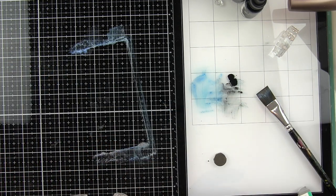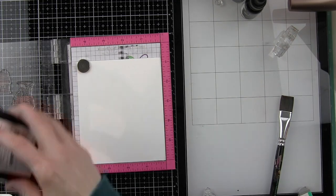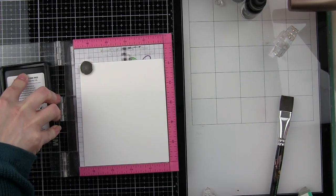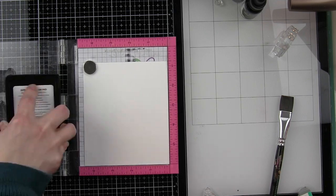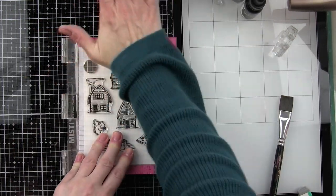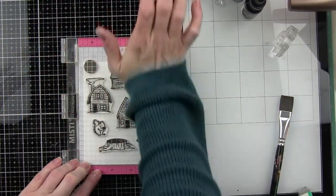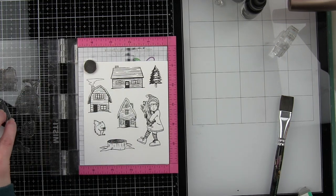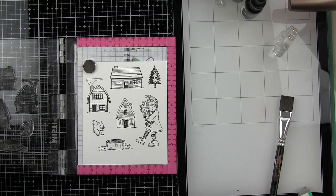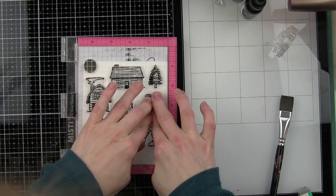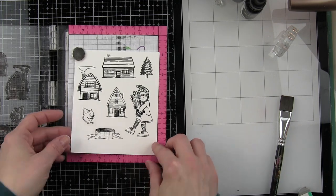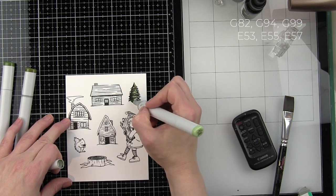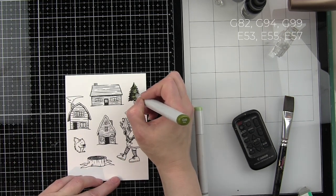For my background scene I am using images from the Hero Arts Bundle Up stamp set. We'll be using the girl, squirrel, tree stump, and house from this stamp set for our card as well as the acorn. From the Home for the Holidays stamp set we're going to be using two of the homes from this and then a tree image. We'll also be using a snowflake from this for the acetate layer and I'll show you that here in a little bit. I'm using the Hero Arts Intense Black ink to stamp my images on smooth white cardstock. This is going to give me a great stamped outline that I can then color in with Copic markers. The Intense Black ink is Copic marker friendly.